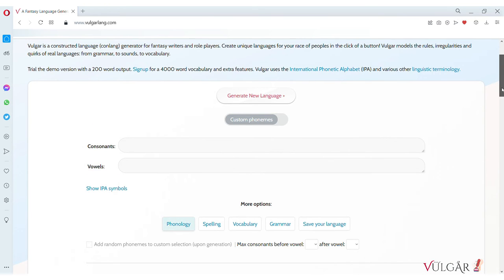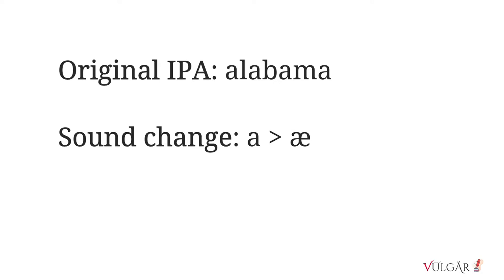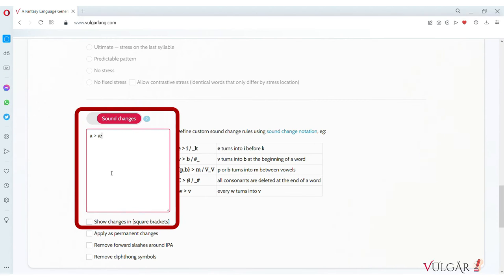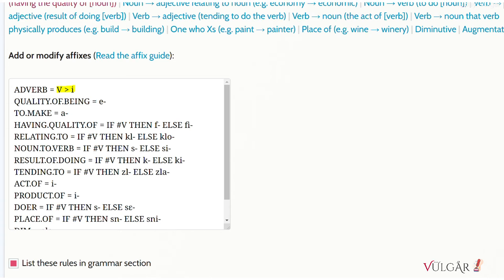Sound change rules change the pronunciation of words. They look exactly like spelling rules, but they change the IPA before spelling rules are applied. Sound changes can be applied to all words in the language using the sound changes option, and they can be encoded into affix rules, both in grammar tables and derived words.